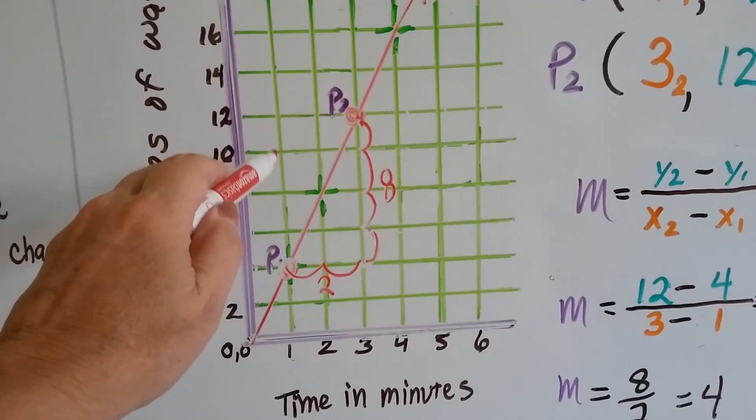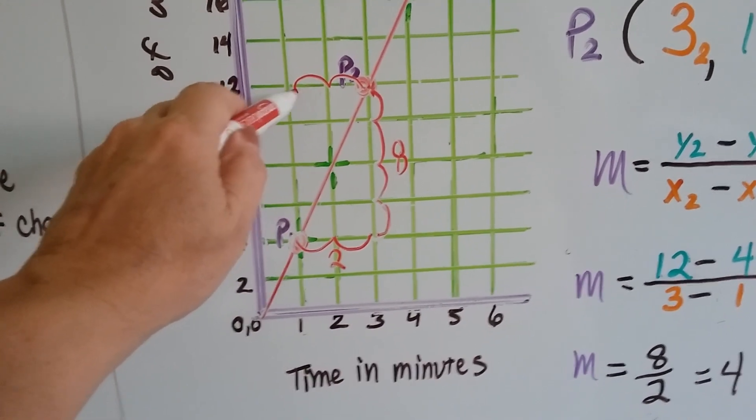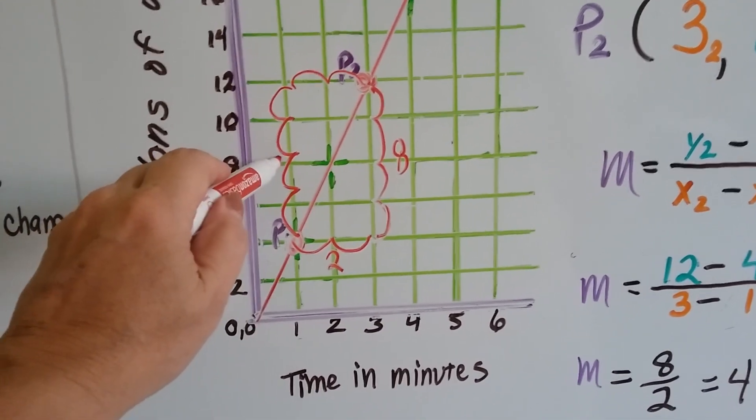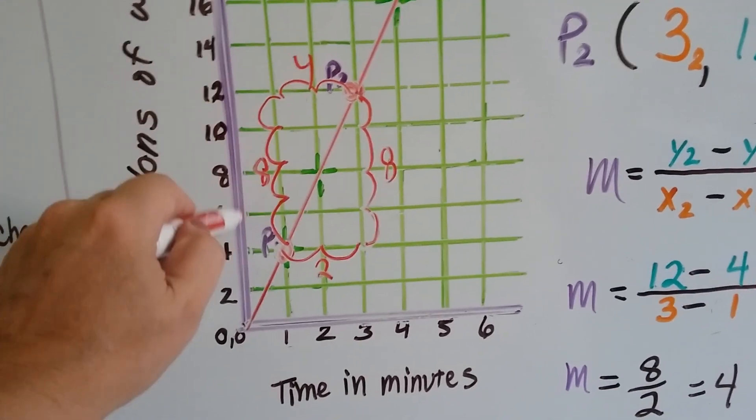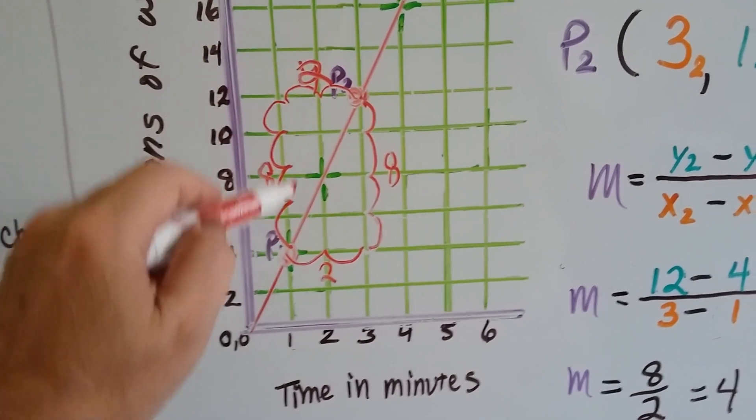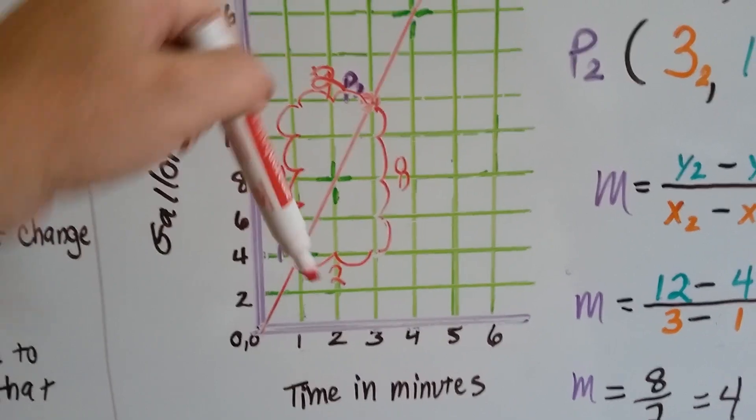And it doesn't matter if I did it on this side of the line. I could have done it on this side of the line, and I still would have had two for the run and four for the rise. An eight for the rise. It would have been the same. It still would have been an eight and a two for the rise and the run. The run is the horizontal and the rise is the vertical.